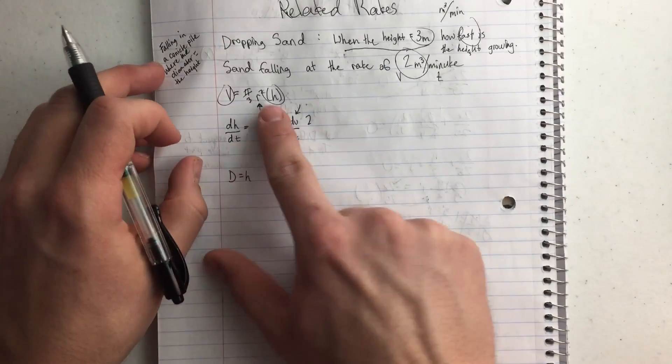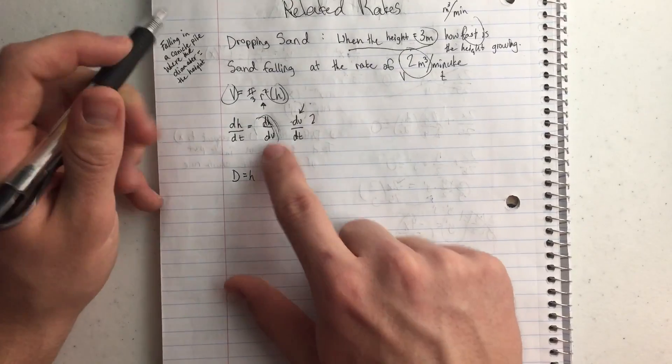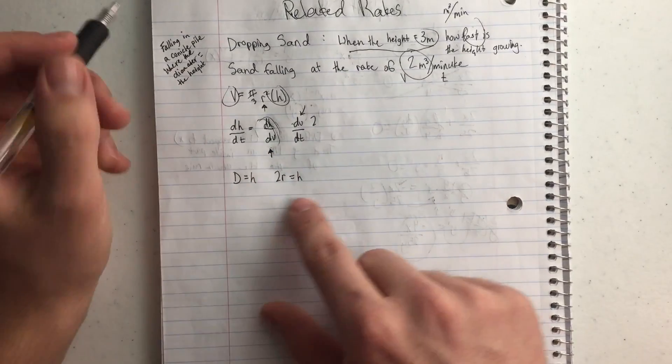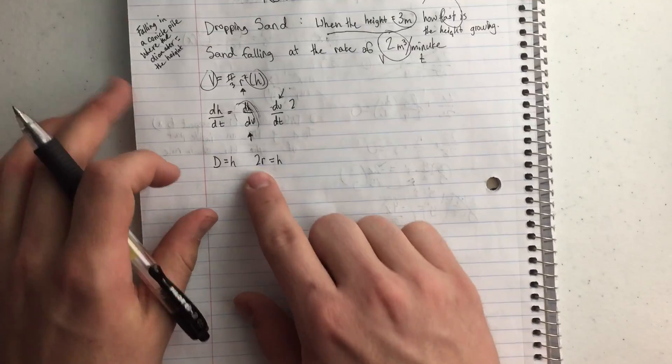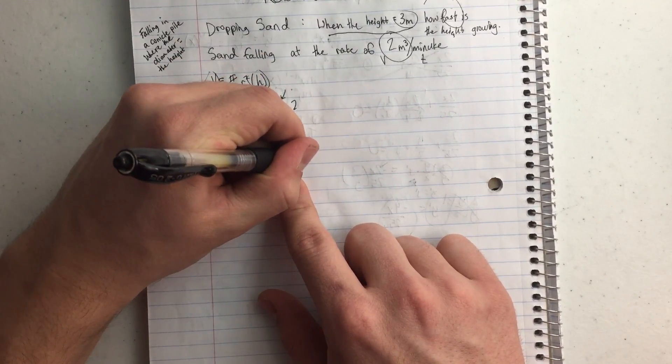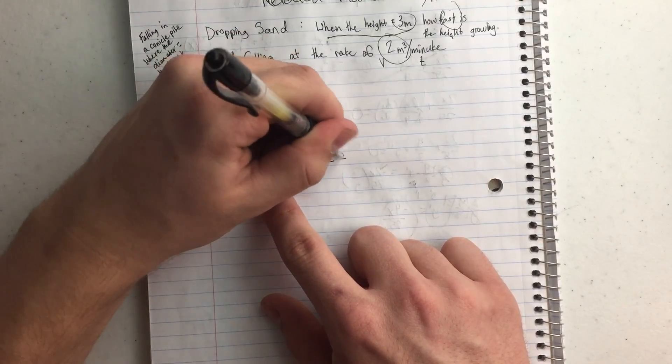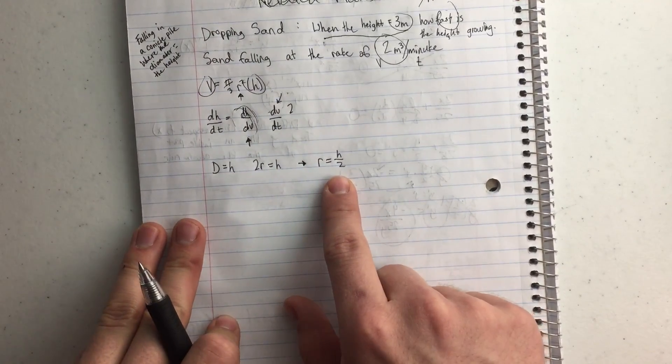So I want to get rid of this r and turn this all into h's, so I have v's and h's, which is what is in my rate that I need. So, I have 2r equals h, so I'm going to change that to look like r equals h over 2. So I just divided by 2 to get this.